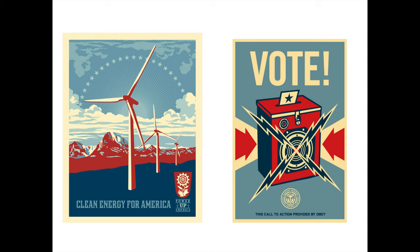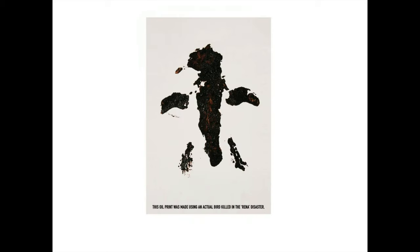We're looking at a Greenpeace poster. Greenpeace is very aggressive with their imagery regarding cruelty to nature and animals. In this poster we see a print from an actual bird that was killed in the Rena disaster — it's oil on a bird, and they stamped it to paper to make the poster image. At the bottom it says this oil print was made using an actual bird killed in the Rena disaster. The hierarchy becomes the shocking image of this dead bird imbued with oil, then the title comes in as a second punch — very powerful.